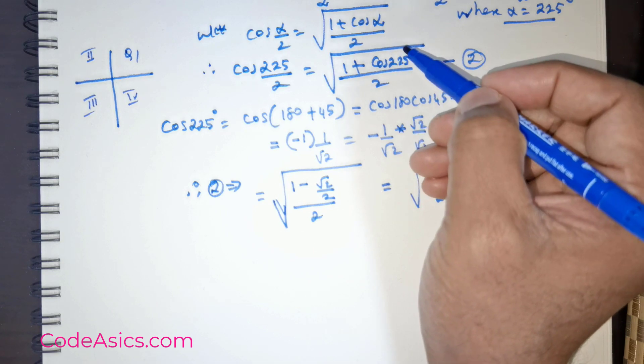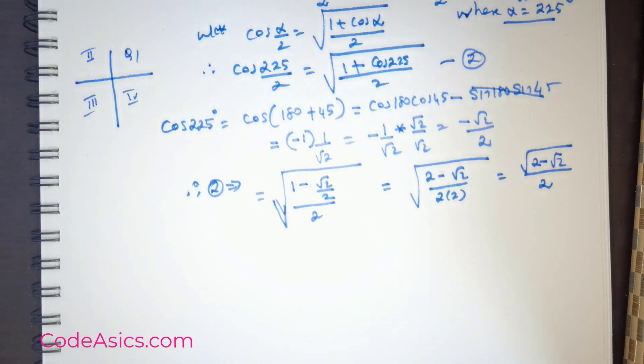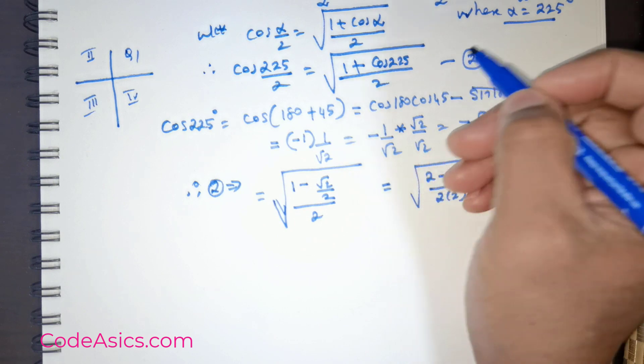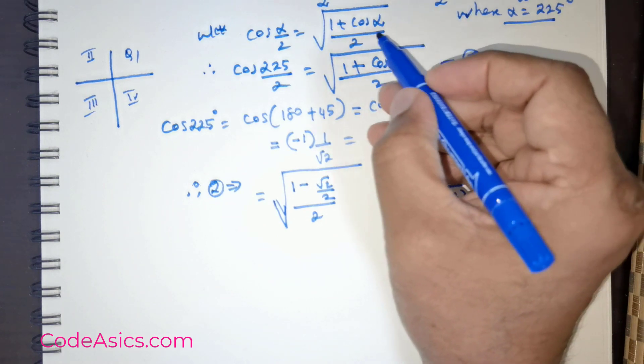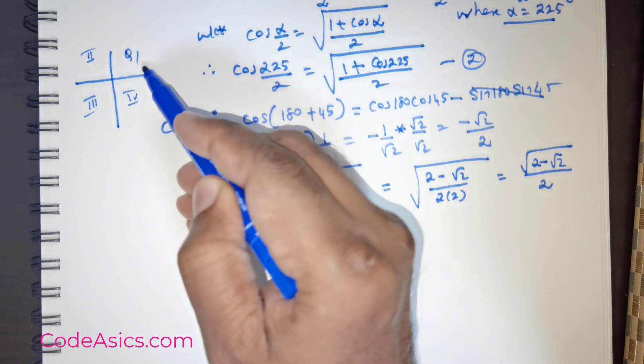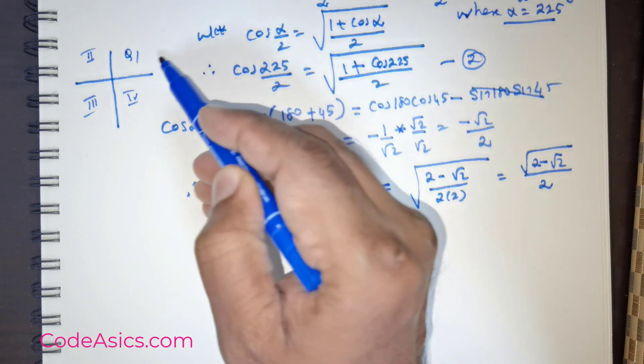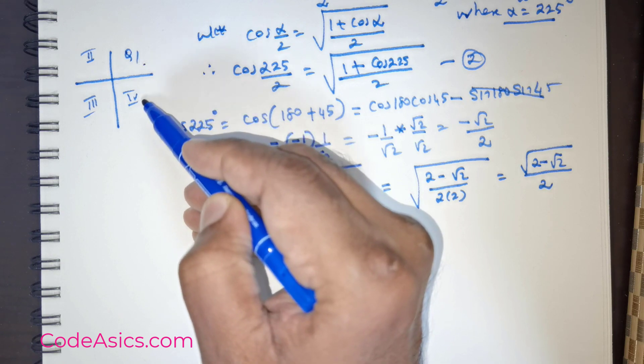If you remember, I had made the rule for taking the value of square root of 1 positive cos alpha divided by 2, the half-angle rule. That rule is the universal rule, and it states that this can be positive if the value of alpha over 2 lies either in quadrant 1 or in quadrant 4.